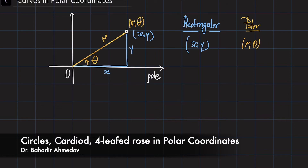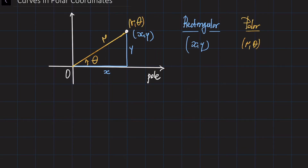If you remember, we've defined points in polar coordinates with one pair of numbers, r and theta, where r means the distance between the point and the origin, which is the center of the coordinate system. And theta is the angle which connects the pole and the line connecting the point and the origin.